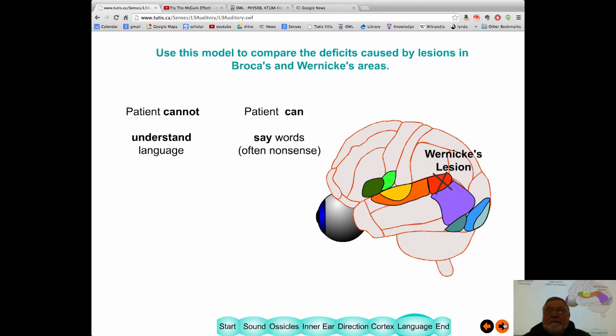What happens if you have damage of these two very important areas, Wernicke's and then Broca's? If you have damage to Wernicke's area, you have, you cannot understand language. So, you can't, when you hear the spoken word, you can't understand it. You can still say a word because this part is in effect. But what you say is often nonsense.